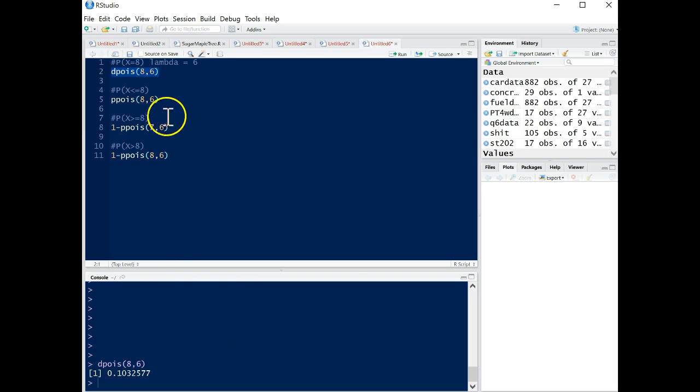If we come back to R, if we want to know the probability that the number of accidents is less than or equal to 8, we can use the command ppois. This is the same as the probability of X less than or equal to 8. We put in 8 as our X value, 6 as our lambda, run this line, and we get 0.8472. So it's pretty likely that the number of accidents will be less than or equal to 8.